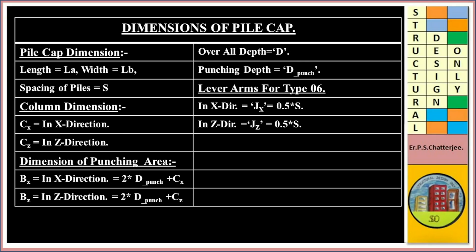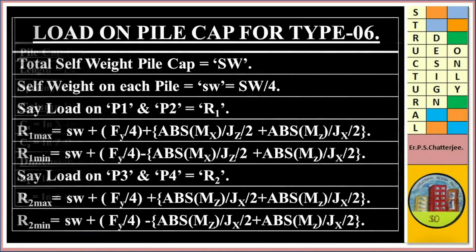Lever arm for Type 6 — that is, 4 Pile Cap — in X direction. Load on Pile Cap for Type 6, that is 4 Pile Cap. Total self weight on Pile Cap is equal to SW divided by 4. Load on P1 and P2 is equal to R1.